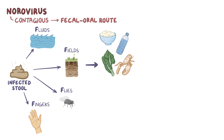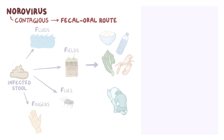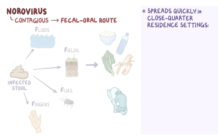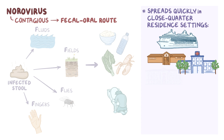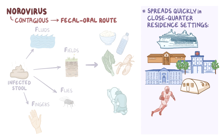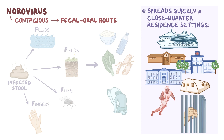It can also be spread by droplets of vomit. Norovirus spreads quickly in close-quarter resident settings — this is why many cruise ships have made the news because of norovirus outbreaks. Outbreaks are also common in nursing homes, hospitals, schools, military barracks, on athletic teams, and in prisons.